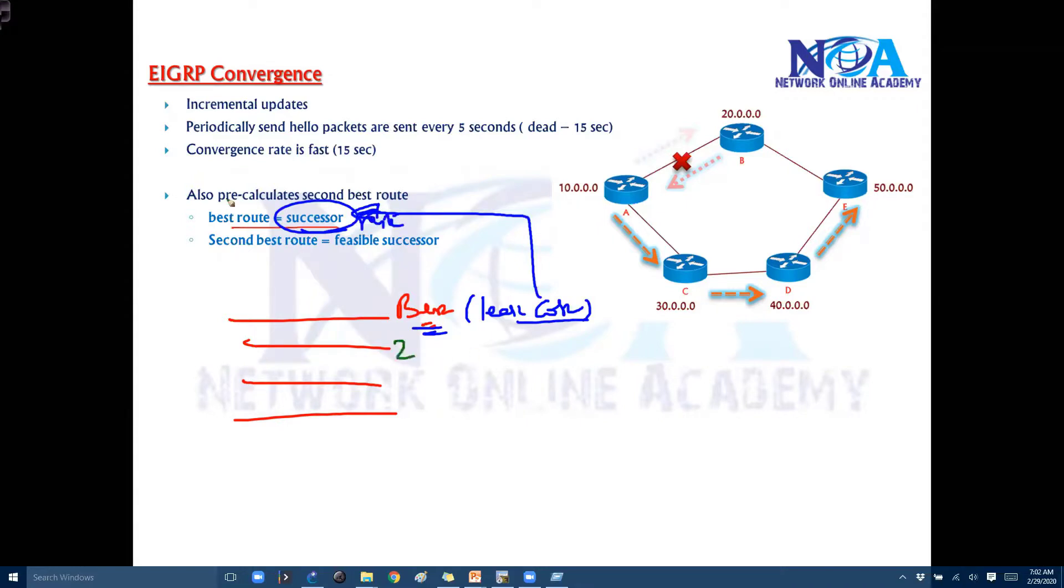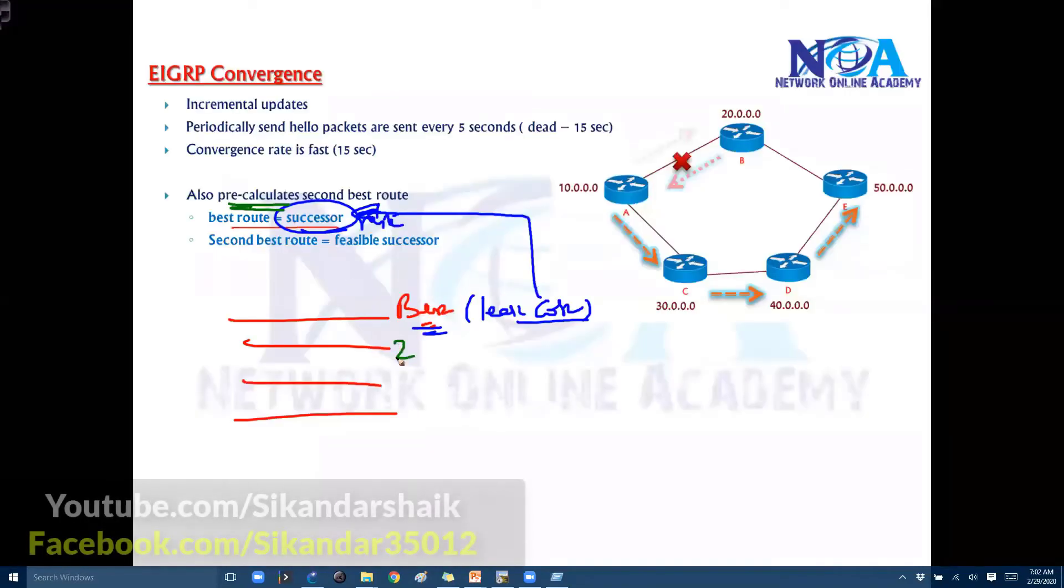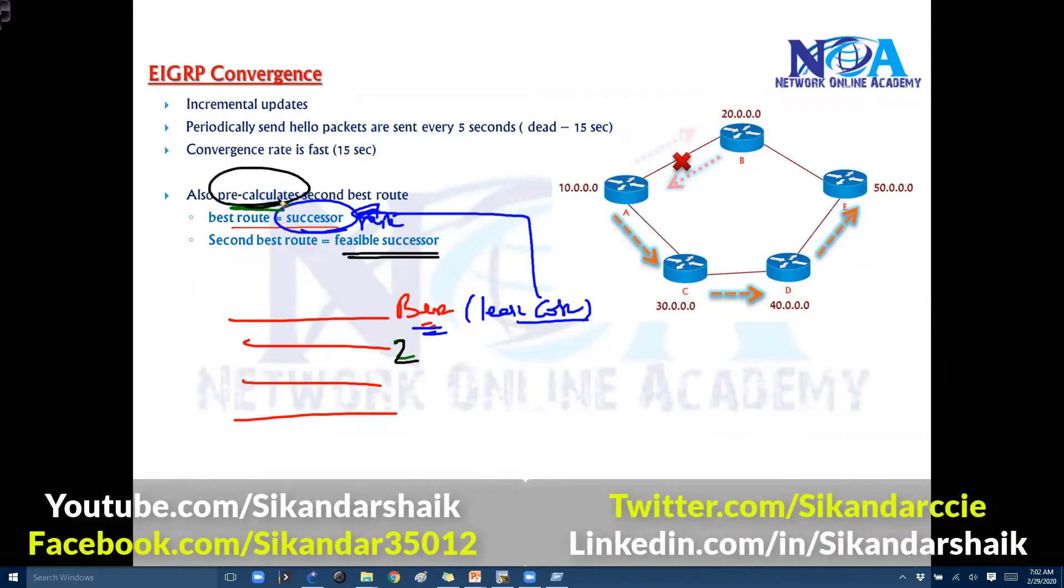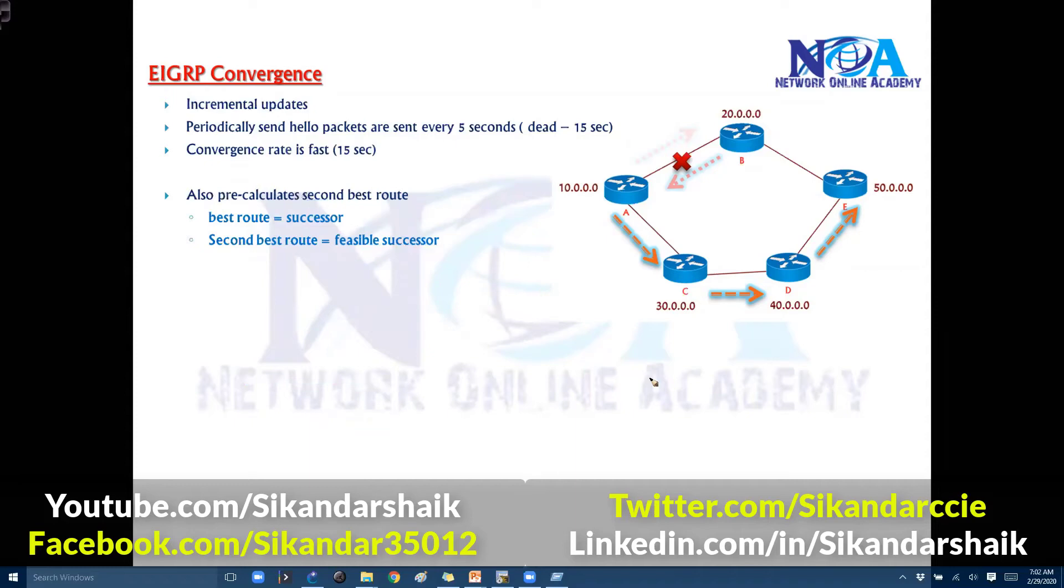And it will also precalculate the second best route. Now precalculate means before the best route fails. So unlike in other protocols let's say this is my best route. And then if that fails then it will see what are the updates coming. And then it will calculate it's not like that. So immediately it can start use the second route. And it is precalculated before the best route fails. And technically we call it as a feasible successor. But again there are some conditions for that.